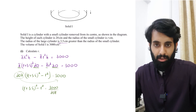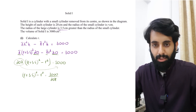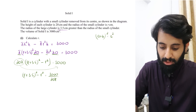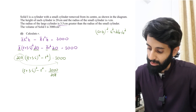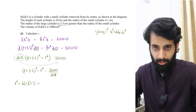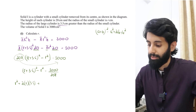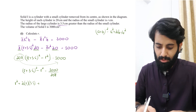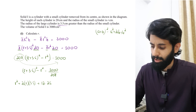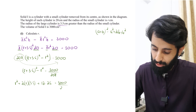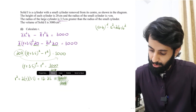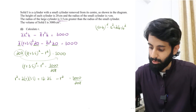Importantly, (r + 3.5)² is NOT r² + 3.5². You must use the identity (a + b)² = a² + 2ab + b². Expanding gives r² + 2(r)(3.5) + 3.5², and 3.5² = 12.25. Then subtracting r² causes the r² terms to cancel — so there's no quadratic to solve.